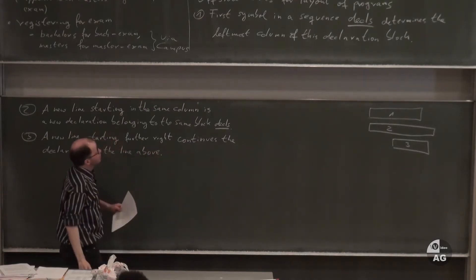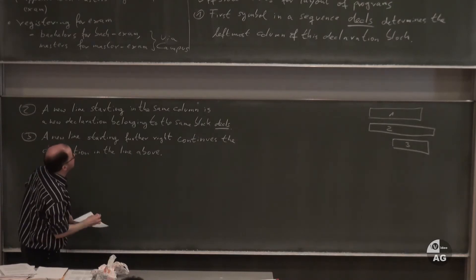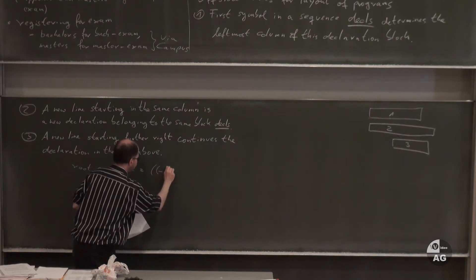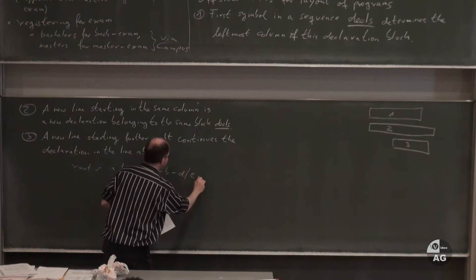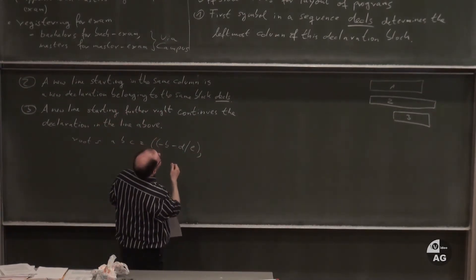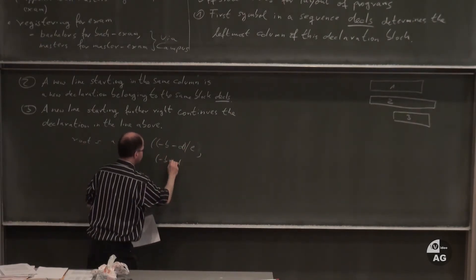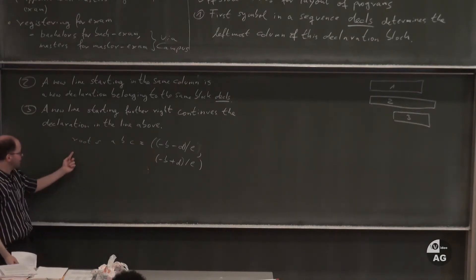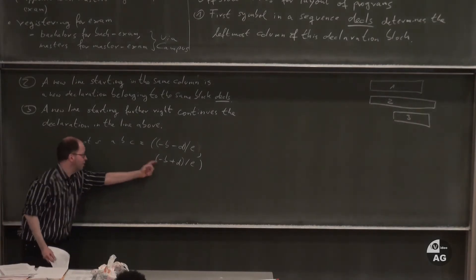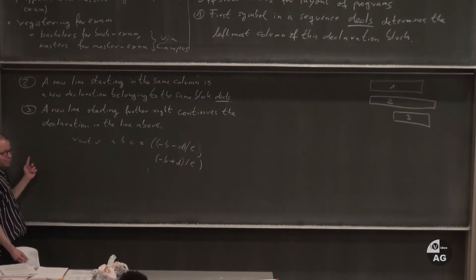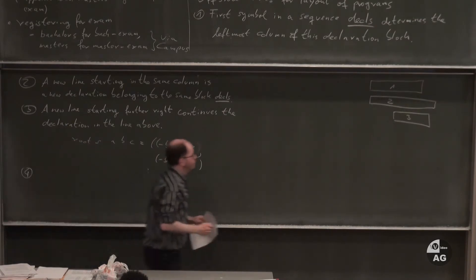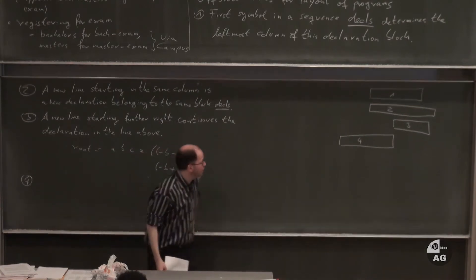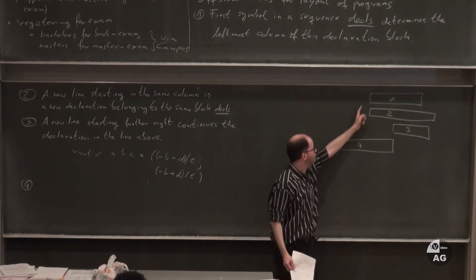For example, you can write 'roots a, b, c equals minus b, minus d divided by e' and if you run out of space, continue on the next line with 'minus b plus d divided by e', as long as it starts further to the right. It can start anywhere further right, but not at or left of the first column.